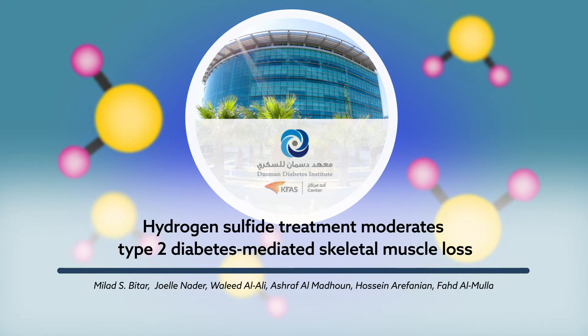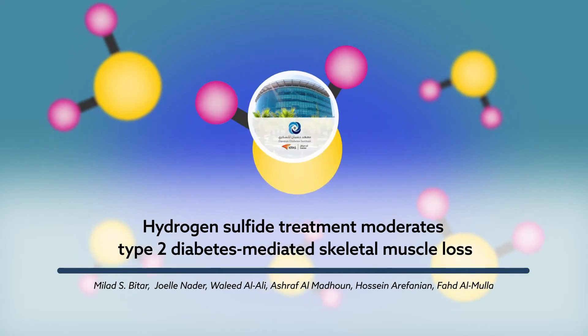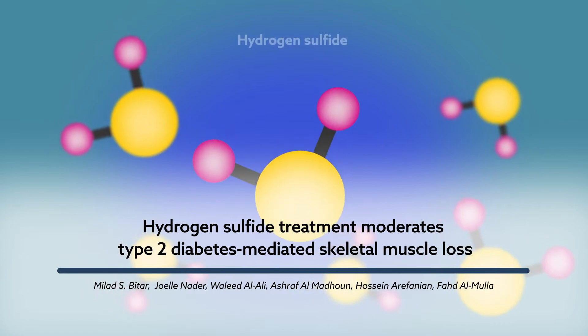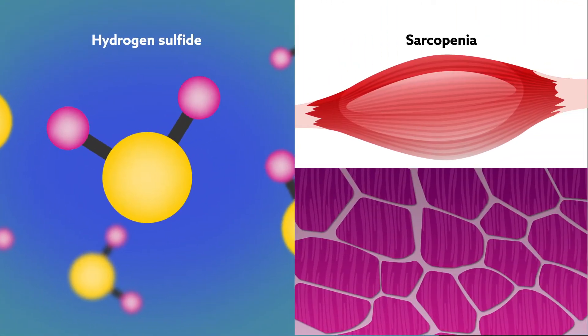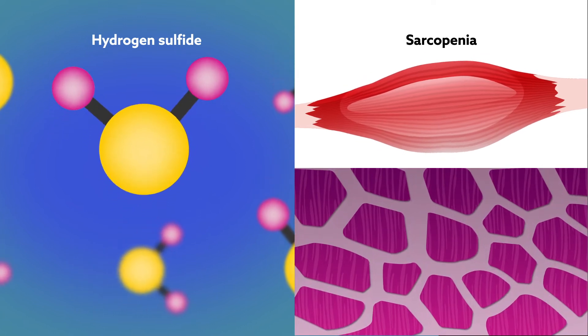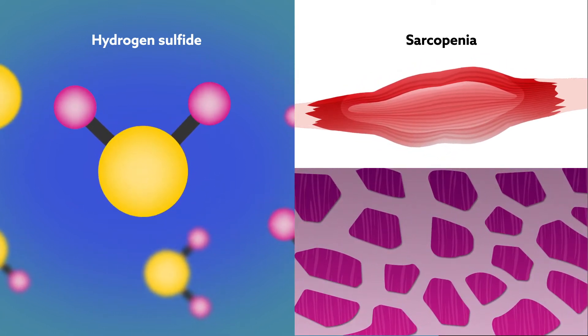A recent study published in the Journal of Oxidative Medicine and Cellular Longevity suggests that the molecule hydrogen sulfide can help mitigate sarcopenia, a disease characterized by decreased muscle loss and function that often leads to disability in patients with diabetes.